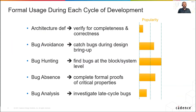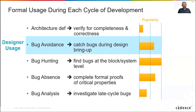If we look at formal usage during each cycle of development, we can see that it is applicable in many different places, all the way from architecture to post-silicon bug analysis. Working with many customers, we're seeing that designer usage of formal for bug avoidance at the block level is a rapidly growing area. Our customers are realizing that catching bugs early provides the highest ROI and results in higher quality RTL in the finished product.